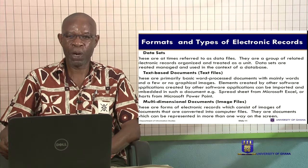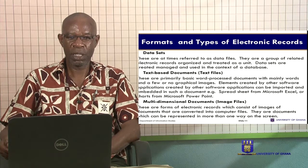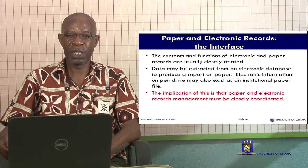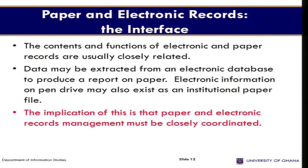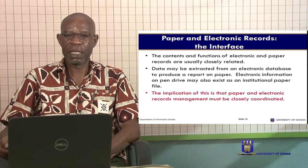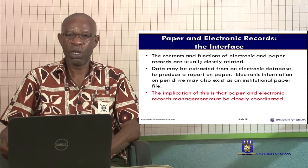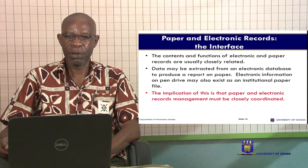Text-based documents, or text files, are primary basic word-processed documents with mainly words and few or no graphical images. Multi-dimensional documents are forms of electronic records which conceive of images of documents that are converted into computer files. Paper and electronic records are interfaced — the content of electronic and paper records are actually closely related. You can convert a paper record into an electronic record by digitizing it, scanning it and converting it to soft copy form.